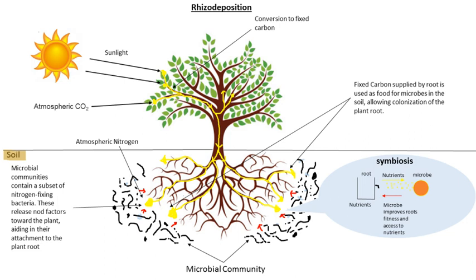Endophytes are bacteria or fungi that live within plant tissue. They may colonize intercellular spaces, the root cells themselves, or both. Rhizobia and dark septate endophytes, which produce melanin — an antioxidant that may provide resilience against a variety of environmental stresses — are famous examples.